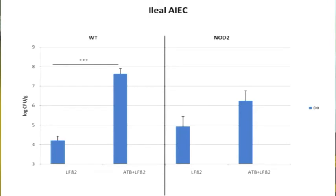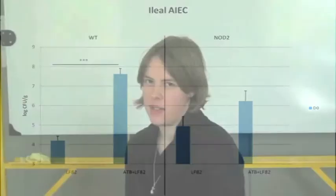Our results first indicate that in the absence of antibiotic treatment, LF82 is unable to colonize ileal and colonic epithelium of wild-type and NOD2 mutant mice at D0, D30, and D60. However, intestinal flora disruption induced by antibiotics led to a significant increase of LF82 colonization in ileal and colonic epithelium in wild-type and NOD2 mutant mice at D0, as shown by the blue bars. The intestinal flora was deeply disrupted, as shown by the increase of Lactobacillus flora observed at D0 in the colon and ileum of mice.